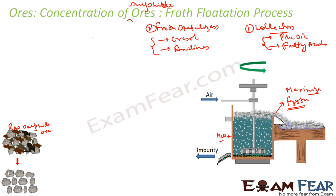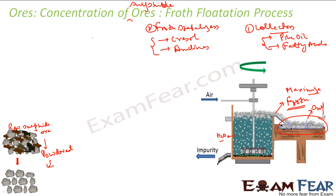To summarize the process: we take the raw sulfide ore, powder it, add water, and add collectors so the sulfide ore particles don't get too wet — examples being pine oil and fatty acid. We also add froth stabilizers to get more and more froth. The sulfide particles cling and stick to this froth. We then collect the froth in another container and dry it to get the concentrated sulfide ore.